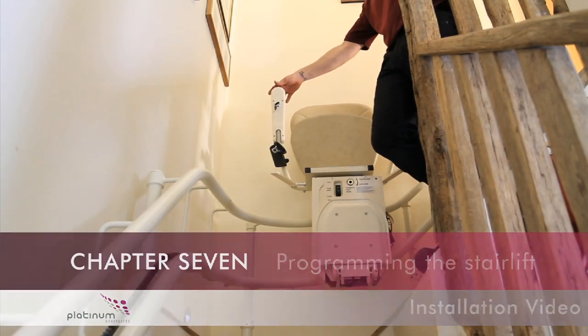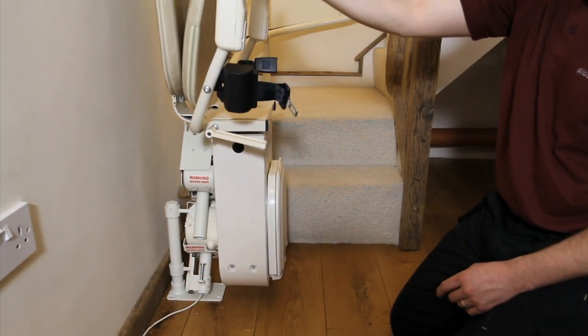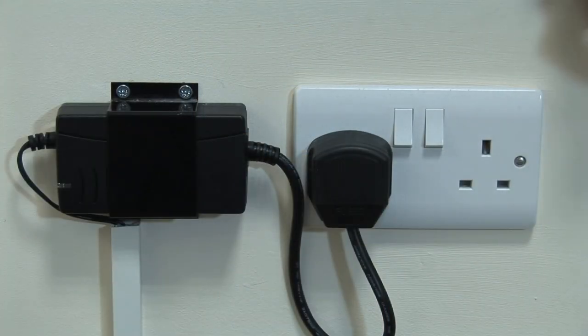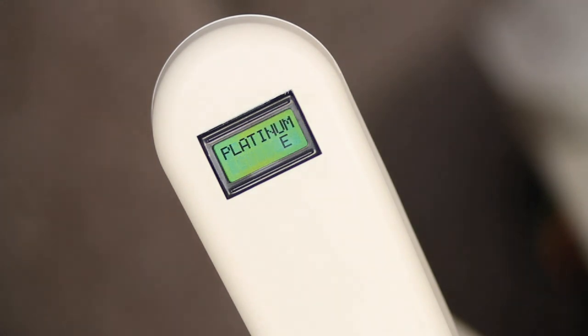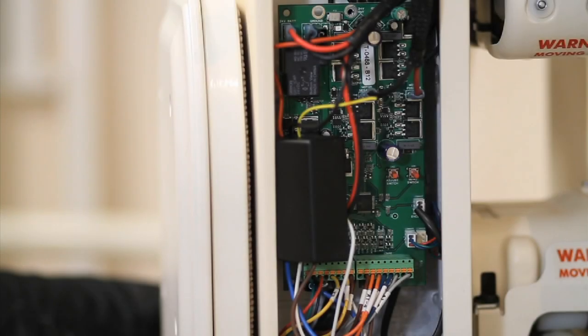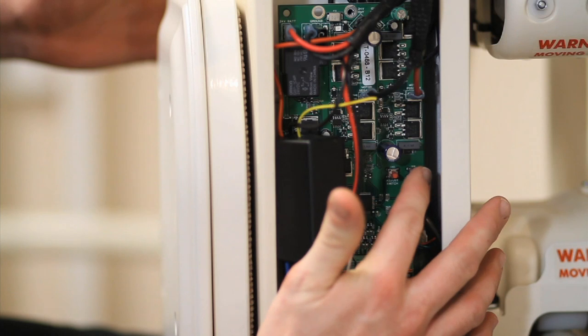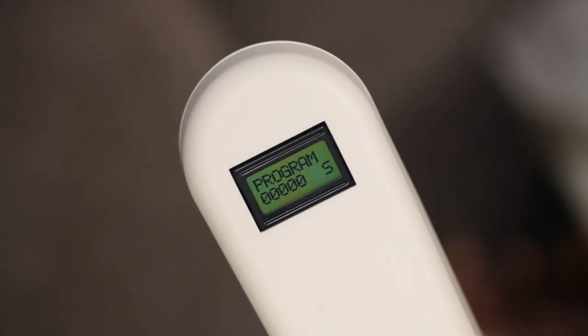Chapter 7: Programming the stairlift. In order to begin programming the stairlift, run the carriage all the way to the bottom end stop and onto its charging point. Switch the charger ON and, as mentioned previously, check the display reads PLATINUM and indicates that the stairlift is charging. Remove the right side cover of the carriage to access the PCB. Press the red menu button on the right hand side of the circuit board for approximately 8 seconds. The word PROGRAM will appear on the display along with an S in the bottom right hand corner. This S stands for slow speed.